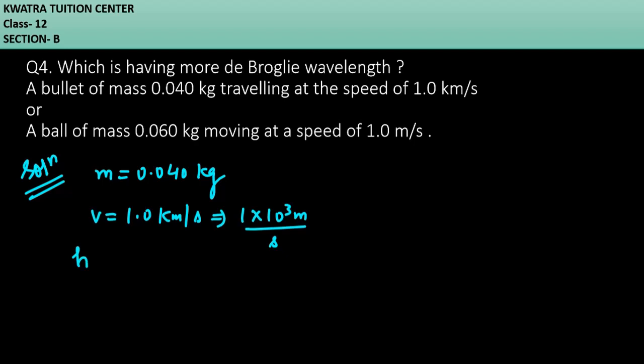Then after that, you know, Planck constant is 6.64 into 10 raised to power minus 34 joule second. So yes, now you have to find the wavelength. What is the formula? Lambda is equal to H over mv.